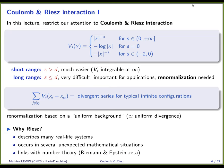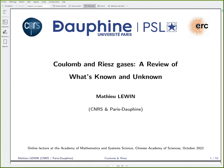Why do we look at Riesz potentials? They describe many real-life systems and occur in several purely mathematical situations, for instance with number theory — the Riemann zeta function in one dimension and the Epstein zeta function in higher dimensions.